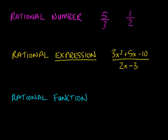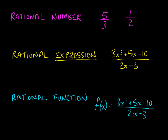A rational function is similar to a rational expression except it's written in function form. For example, f(x) equals 3x squared plus 5x minus 10 over 2x minus 3. The function notation indicates that this whole expression would be a function — it would pass the vertical line test — and both the numerator and denominator by themselves would also be functions. So a rational function is a fraction or ratio of two polynomial functions.